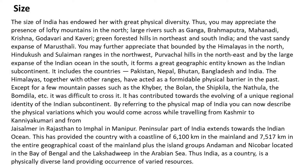By referring to the physical map of India, you can now describe the physical variations which you would come across while traveling from Kashmir to Kanyakumari and from Jaisalmer in Rajasthan to Imphal in Manipur. The peninsular part of India extends towards the Indian Ocean, providing the country with a coastline of 6,100 km in the mainland and 7,517 km in the entire geographical coast of the mainland plus the island groups Andaman and Nicobar located in the Bay of Bengal and the Lakshadweep in the Arabian Sea.